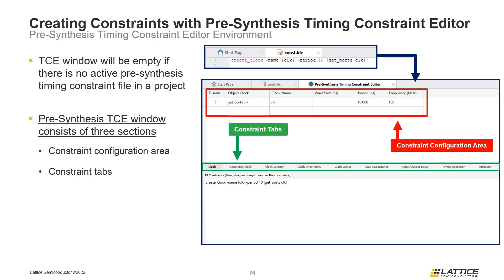At the bottom of the window is the constraint preview area. As pre-synthesis timing constraints are developed, this section will update to display a preview of the constraints that have been created. The order that constraints appear in the preview area is the order they will appear in the constraint file after it has been saved. A useful feature is that the order of constraints in the constraint preview area can be modified by dragging and dropping a constraint's row into a new position.